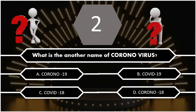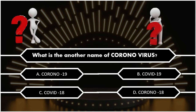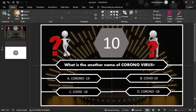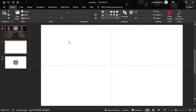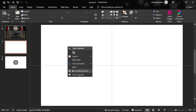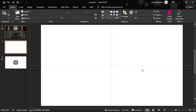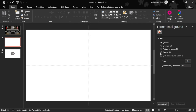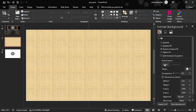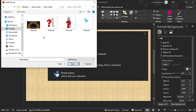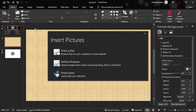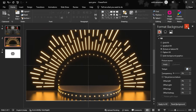We can see how we can create a new slide. First, we insert a blank layout. We can insert a picture in format background, inserting the picture from a file. We can insert a game show background image.